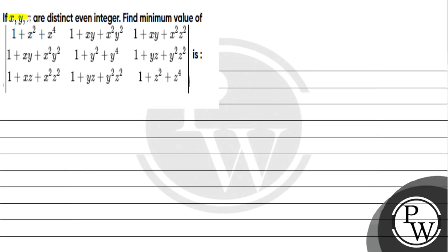Let's look at the question: if x, y, z are distinct and even integers, find the minimum value of the determinant whose entries are 1 plus x squared plus x to the power 4; 1 plus xy plus x squared y squared; 1 plus xz plus x squared z squared; 1 plus y squared plus y to the power 4; 1 plus yz plus y squared z squared; and 1 plus z squared plus z to the power 4.